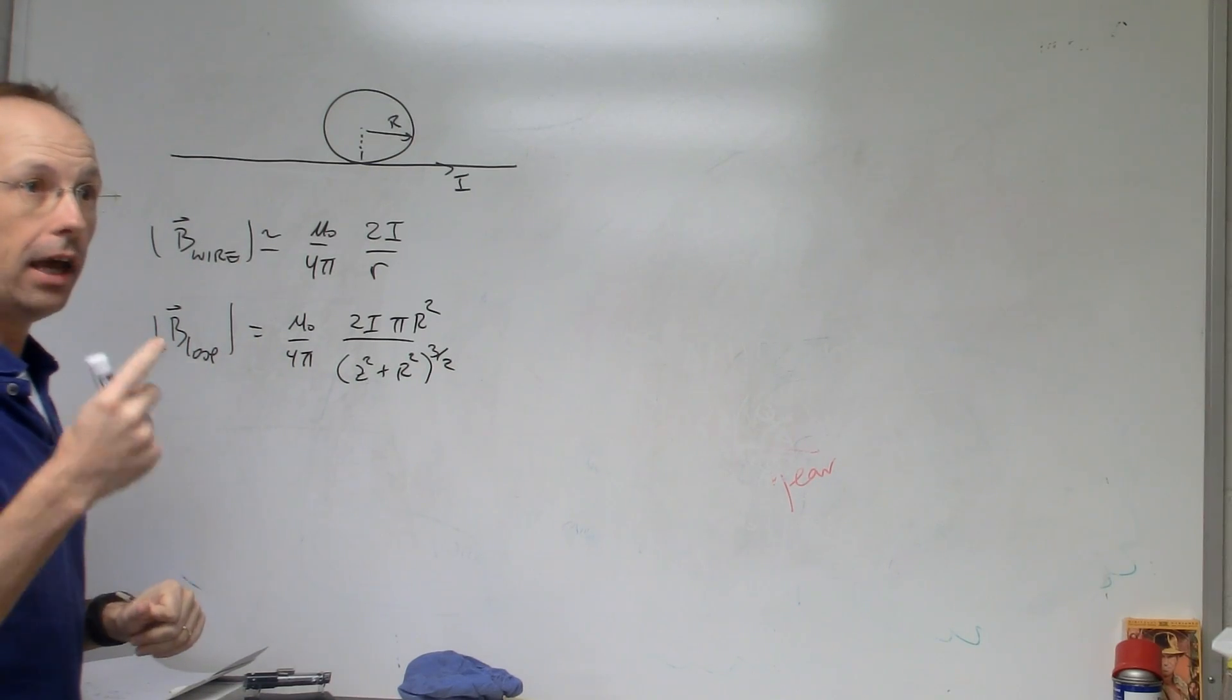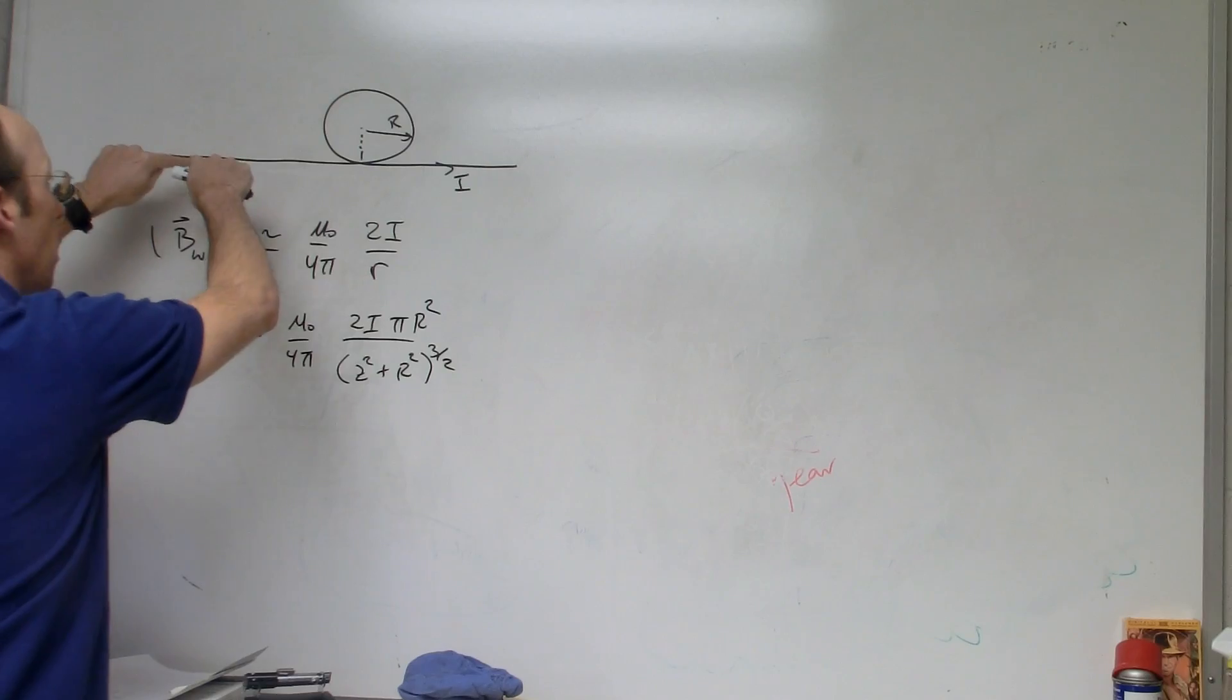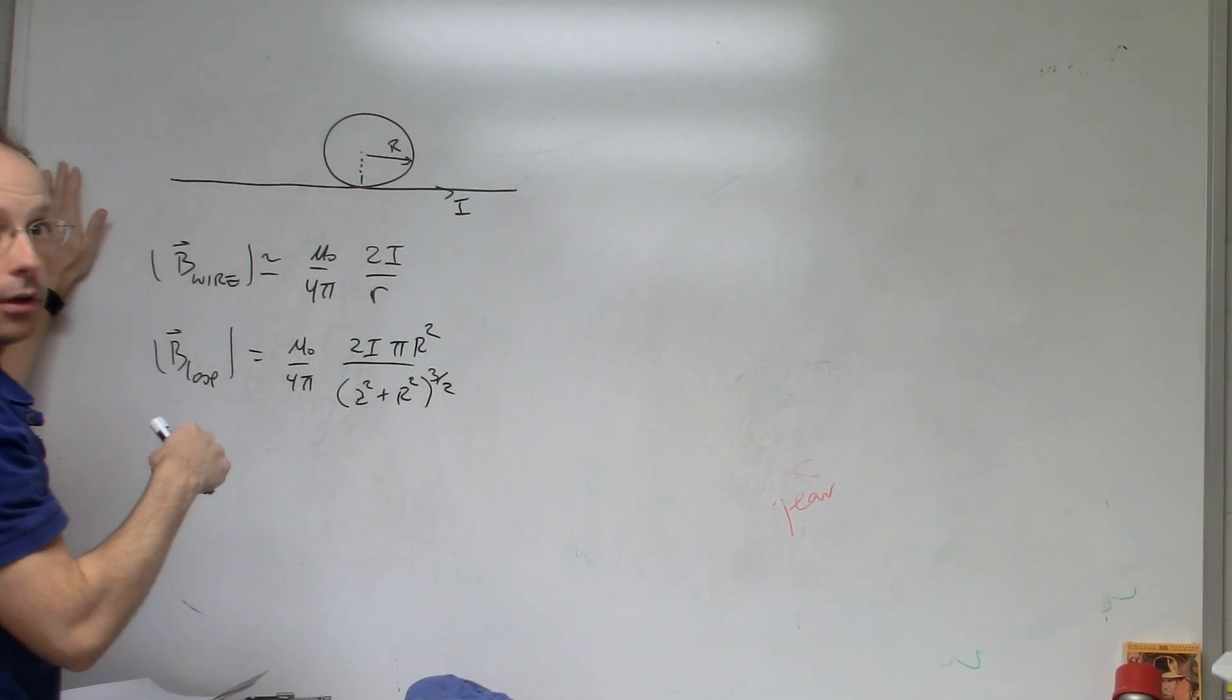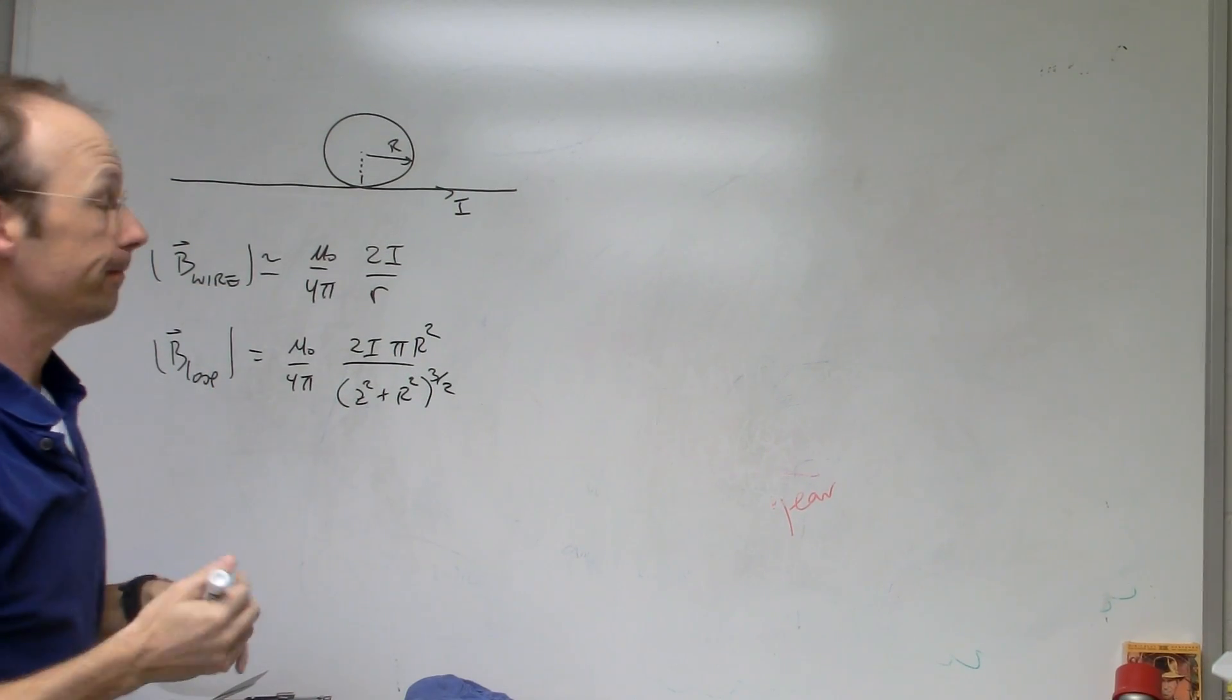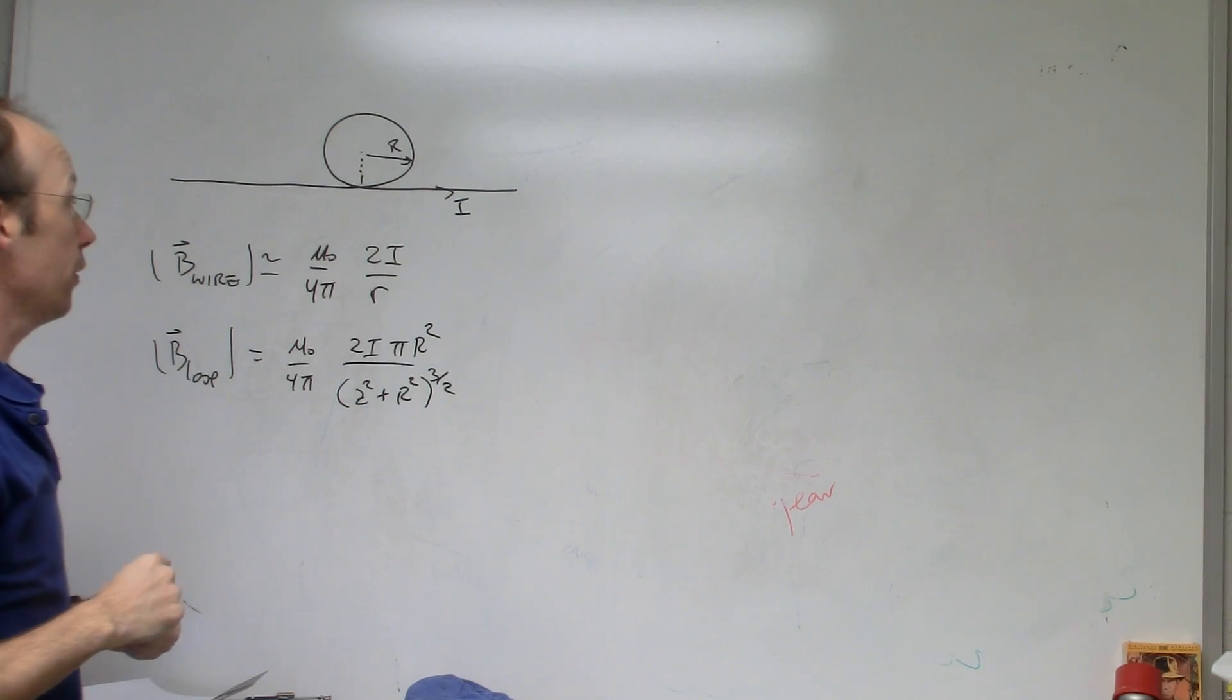So although it's one wire, we really have two devices. We have a long wire and a loop of current, and they both have the same current. So how do we find the magnetic field due to those?